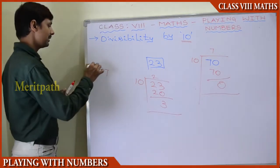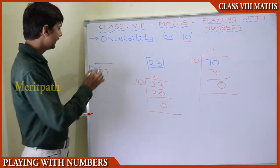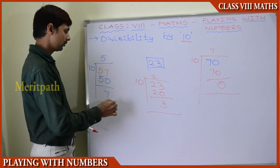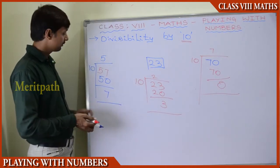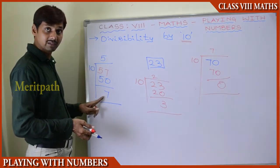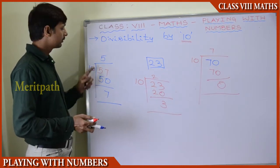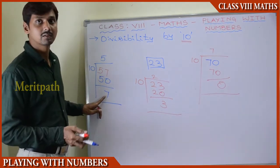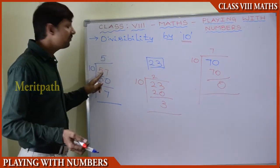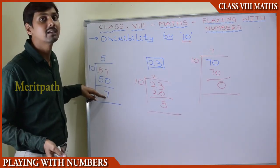Let us divide 57 by 10. 5 times 10 is 50, and then we get 7 as remainder. Since 10 is greater than 7, we cannot divide further. So the remainder is 7, and 57 is not divisible by 10 because 7 is the remainder.